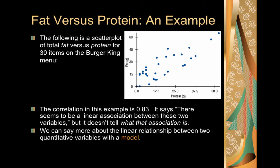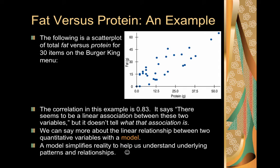So what we want is a model that can say more about the linear relationship between our two variables. In math, a model is often a graph, or a table, or a diagram, or an equation. In this case, our model is going to be an equation. A model is going to simplify reality to help us understand underlying patterns and relationships.